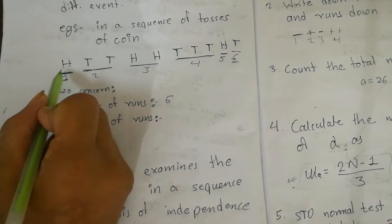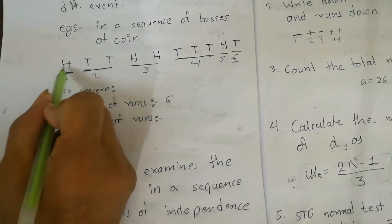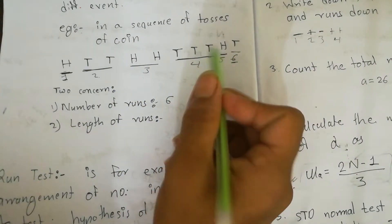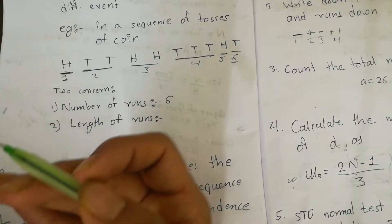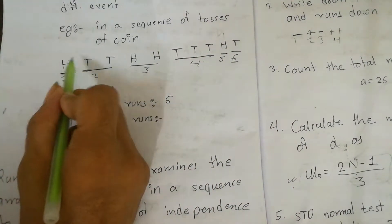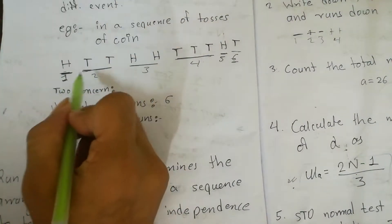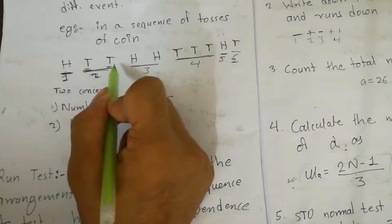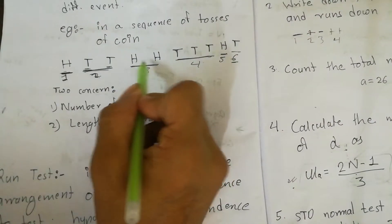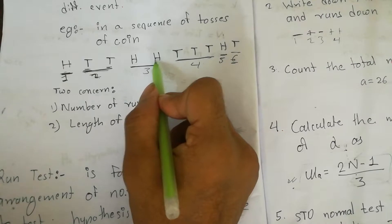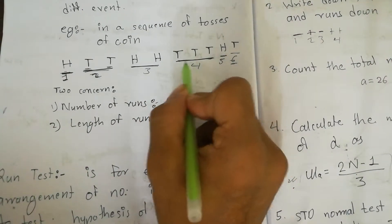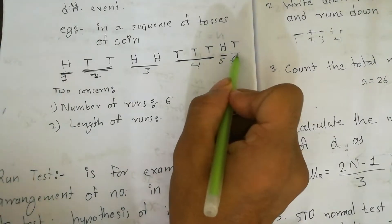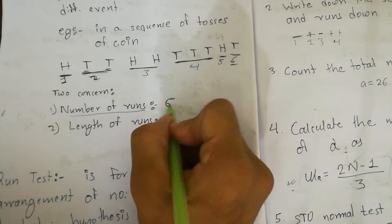Suppose in the sequence of tosses we get: H, T, T, H, H, T, T, T, H, T. To count the number of runs — the first group is H (run 1), then T, T (run 2), then H, H (run 3), then T (run 4), then T, T (still run 4), then H (run 5), then T (run 6). So the total number of runs is 6.